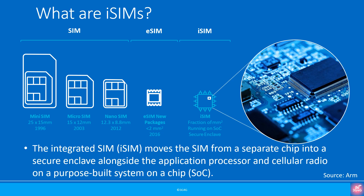The integrated SIM or iSIM moves the SIM from a separate chip into a secure enclave alongside the application processor and cellular radio on a purpose-built System on Chip, SOC. iSIM technology builds on UICC functionality targeting low-power IoT devices, and by integrating the processor core and encryption in an SOC, it has benefits in cost, power and security. It should be noted that eSIMs and iSIMs are secure, dedicated physical circuits rather than soft SIMs or software — unlike software, secure physical circuits resist advanced hacking, and device manufacturers and network operators cannot afford the risk associated with implementing SIMs in software.